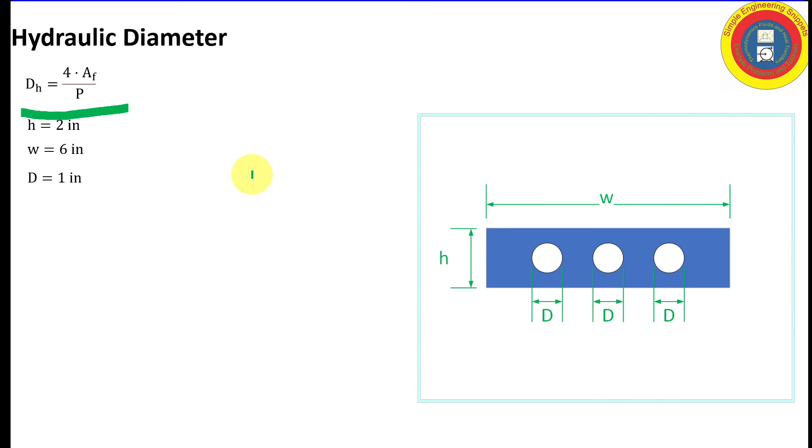So with that let's calculate the flow area. The flow area is the entire flow area of the rectangle minus the area of each of the three tubes. And so this is given by this equation where we have the flow area of the entire rectangle and we subtract from that the flow area of the three internal tubes. Plug in the values and units and we get that the flow area is 9.64 inches squared.